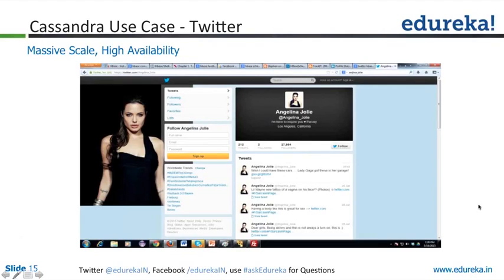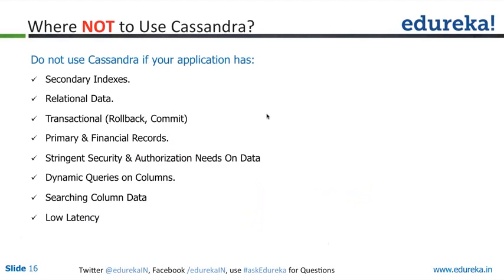Where not to use Cassandra? Absolutely a no-no in the case of a lot of group-by, secondary indexes, transaction data, relational data, stringent security and authorization needs — never use it. And dynamic queries: since Cassandra is a query-based modeling concept where you model your storage subsystem using queries, you first look at the most commonly used queries, then model your data. Since it's a query-based modeling system, dynamic queries are very costly in Cassandra. Wherever there is a dynamic query requirement, don't use Cassandra — you'll get worse performance than other systems.